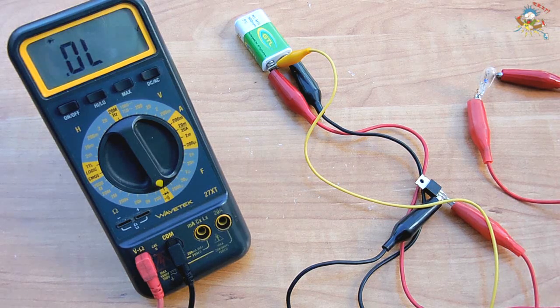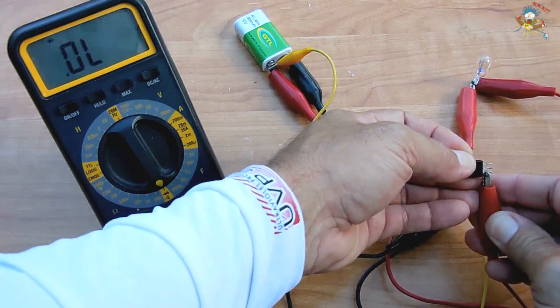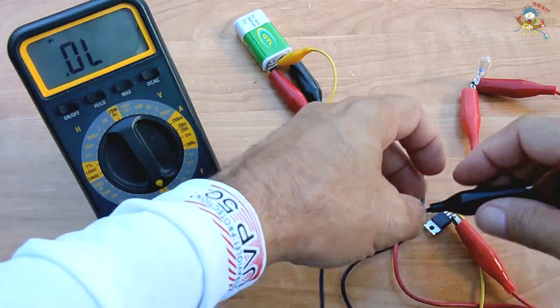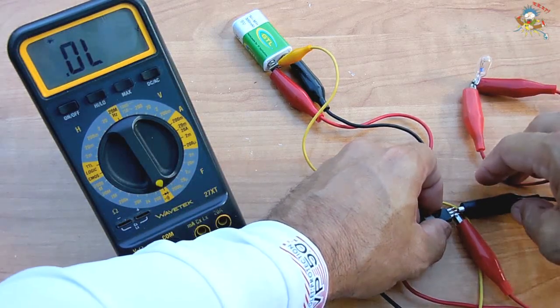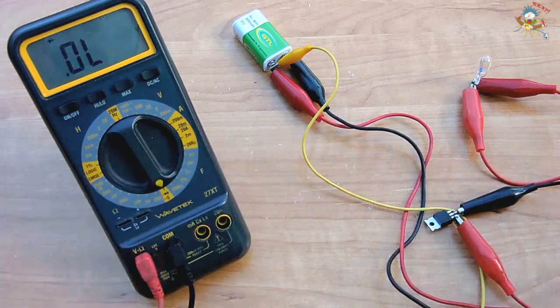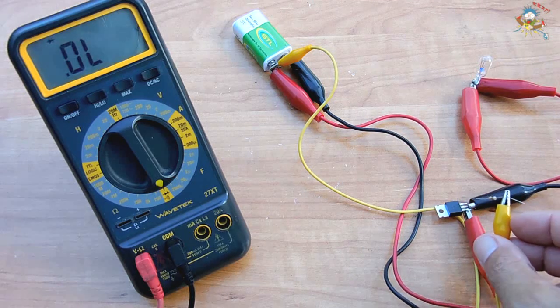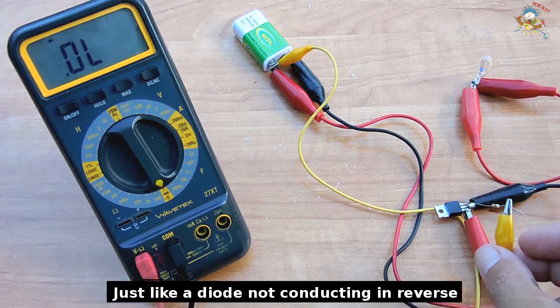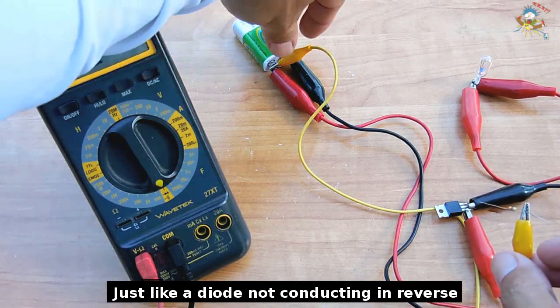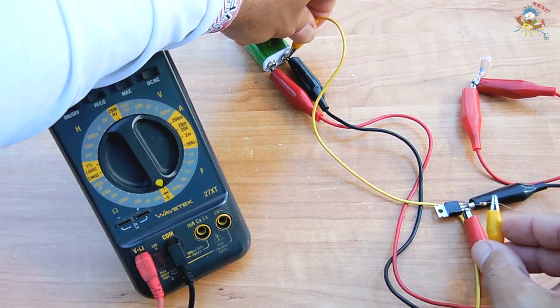If you reverse everything, positive to the cathode and negative to the anode, and you try touching the gate, you can see it's not going to work. I could even take this and move it to the negative on the battery and you can see it will not trigger.